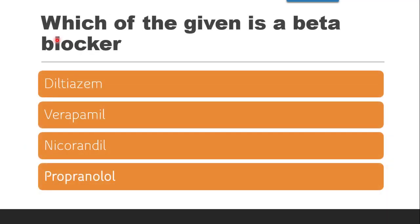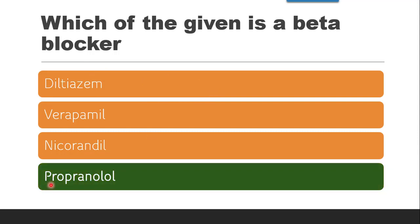The next question is: which of the given is a beta blocker — diltiazem, verapamil, nicorandil, or propranolol? Diltiazem and verapamil are calcium channel blockers. The correct answer is propranolol. As a rule, all drugs ending in '-lol' — such as propranolol, atenolol, metoprolol — are beta blockers.